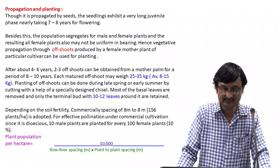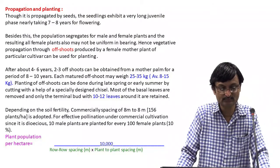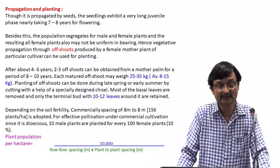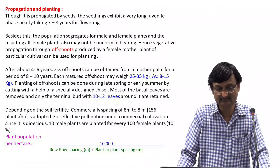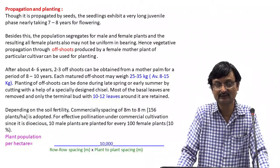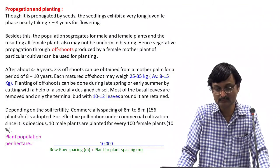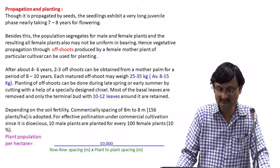The formula for calculating plant population per hectare is: 10,000 (since 1 hectare = 10,000 sq. m) divided by row-to-row spacing in meters multiplied by plant-to-plant spacing in meters.